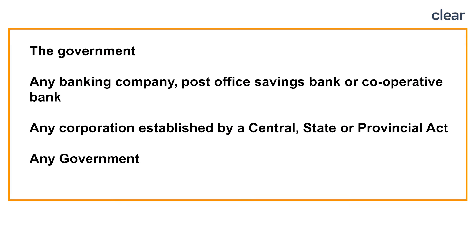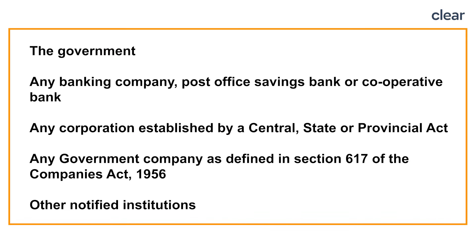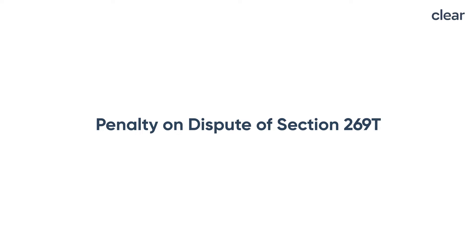A person paying Rs. 20,000 or more towards repayment of a loan or deposit does not have to comply with section 269T if he pays to the following parties: the government; any banking company, post office savings bank or cooperative bank; any corporation established by a central, state or provincial act; any government company as defined in section 617 of the Companies Act 1956; and other notified institutions. 100% of the loan or deposit amount will be the penalty levied by the assessing officer.